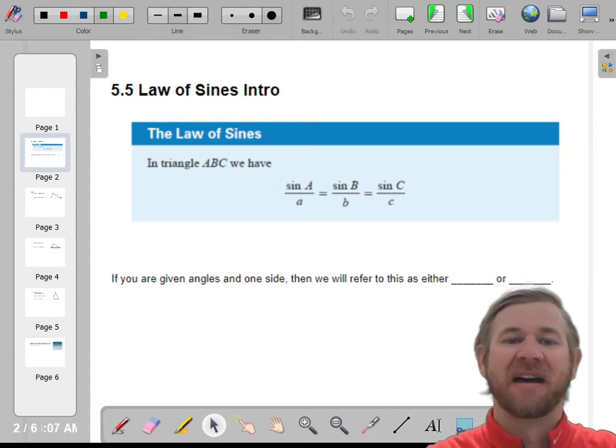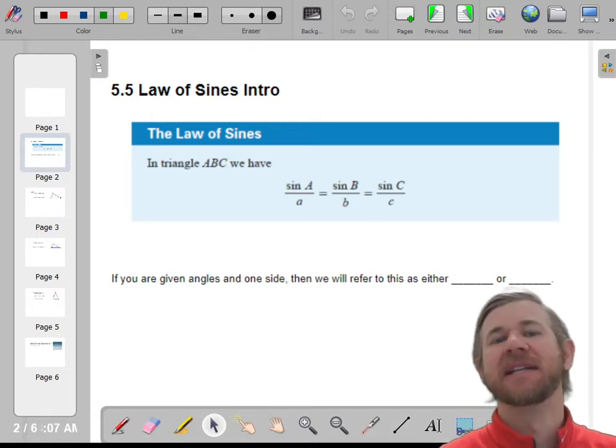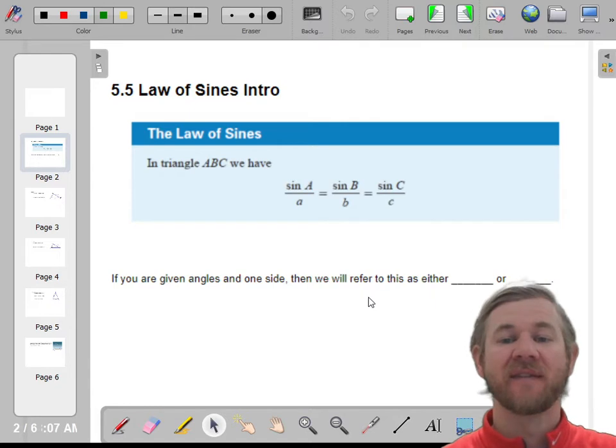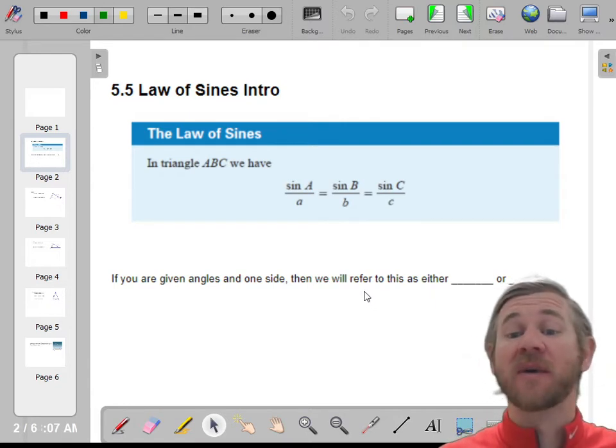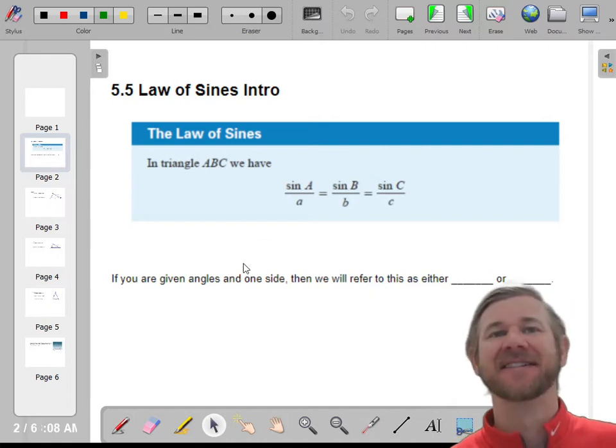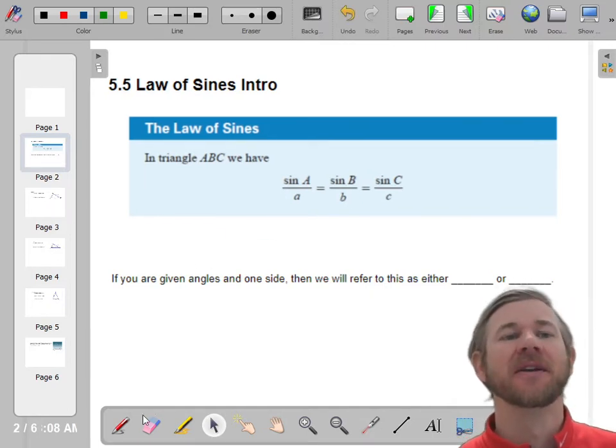Hello, everyone. Let's talk about the law of sines. So we've used the Pythagorean theorem a million times, and that is very useful if you have a right triangle. But what if you don't have a right triangle? Well, the law of sines and the law of cosines are basically extensions of the Pythagorean theorem, and that's what we're going to use.